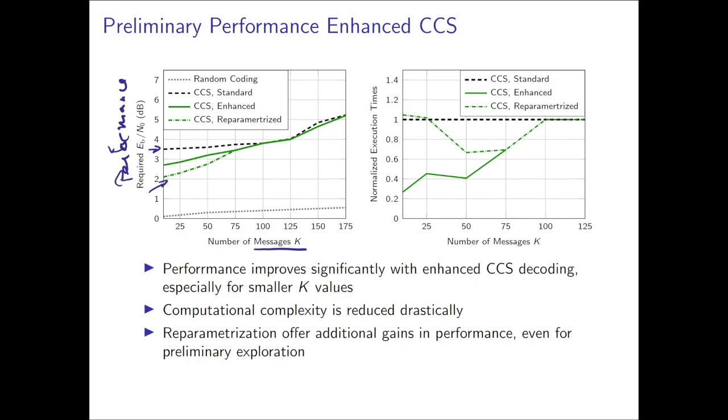On the right, we have a graph that seeks to capture computational complexity. The x-axis is the number of messages, and the y-axis is normalized execution time, where the performance of the standard compressed sensing algorithm is used as a normalization factor. The solid green line is for the pruning, which showcases significant benefits in terms of computational complexity reduction. The dashed green line is that of the reparameterized system, where once we enlarge the slots back, complexity essentially rises to the original level.